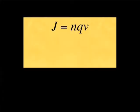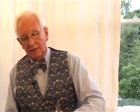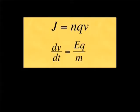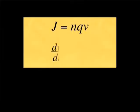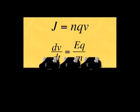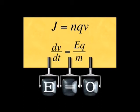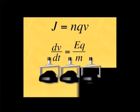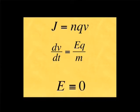The velocity depends upon the electric field. The acceleration is equal to EQ over M, the charge. So if there was an electric field on a superconductor, the charge carriers would continue to accelerate, and the current would continue to increase. But we know this doesn't happen — we have a steady current. In a superconductor, the electric field E is identically equal to zero.